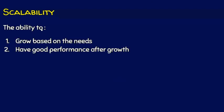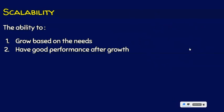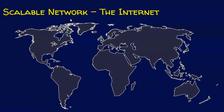Now we shall see the second basic characteristic: scalability. It is the ability to grow based on the needs and maintain good performance even after growth. For example, if there are 10 computers in a network and 10 more are added, the network should work just the same. The best example of a scalable network is the internet — even at this moment, many new devices are connecting and communicating, and the internet handles this perfectly, always giving scope for newcomers.